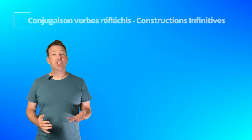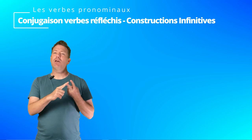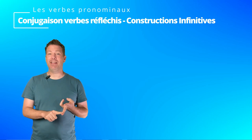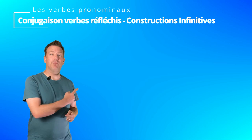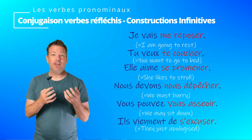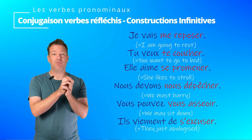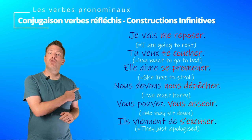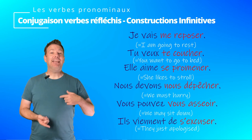In infinitive structures such as the near future — as a reminder, it's aller in the present tense with an infinitive — and the recent past — venir de in the present tense with an infinitive — the reflexive pronoun is positioned right before the infinitive and changes according to the subject. For example: je vais me reposer, tu veux te coucher, elle aime se promener, nous devons nous dépêcher, vous pouvez vous asseoir, ils viennent de s'excuser.